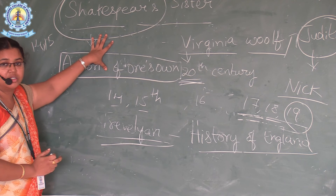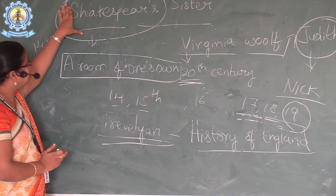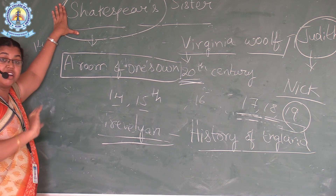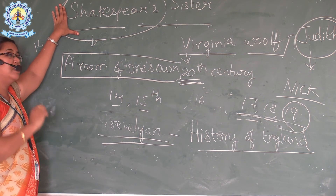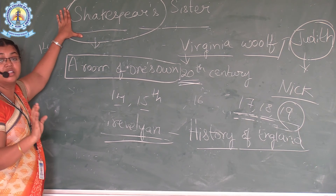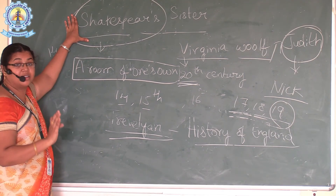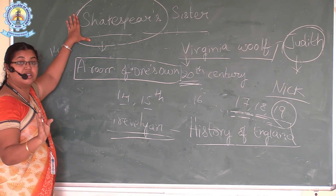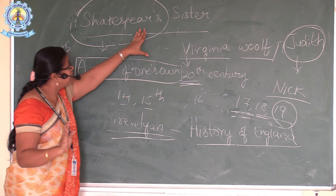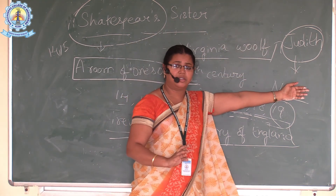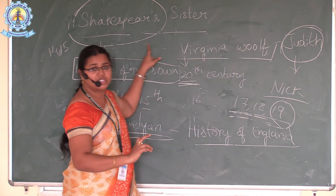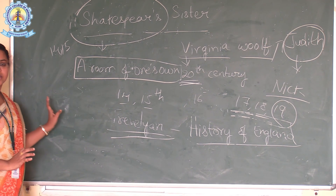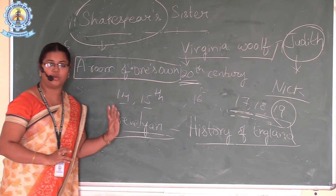So if Shakespeare is a genius — yes, he has written wonderful works that people have remembered as genius work for decades and centuries — if he had a sister, what would have happened? That is what Virginia Woolf wants to project through this lesson. This is all about Shakespeare's Sister, and if you have any doubts, we will discuss them in the next session. Thank you very much.